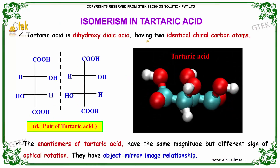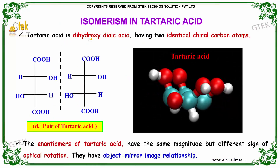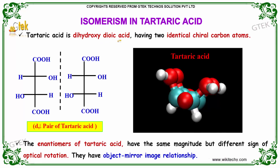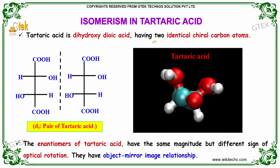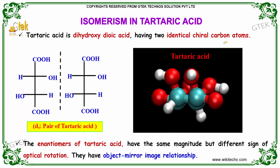Isomerism in tartaric acid. Tartaric acid is a dihydroxy dioic acid having two identical chiral carbon centers.